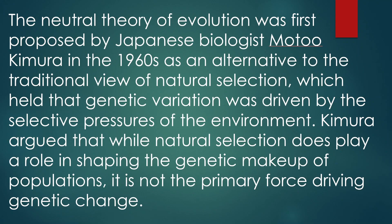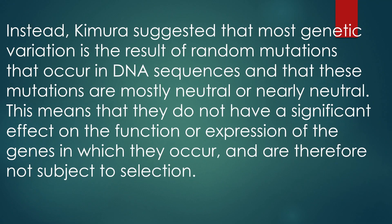Instead, Kimura suggested that most genetic variation is the result of random mutations that occur in DNA sequences, and that these mutations are mostly neutral or nearly neutral. This means they do not have a significant effect on the function or expression of the genes in which they occur, and are therefore not subject to selection.